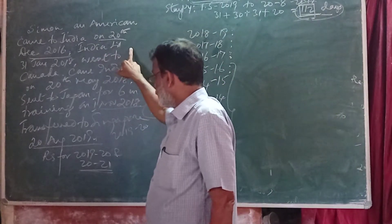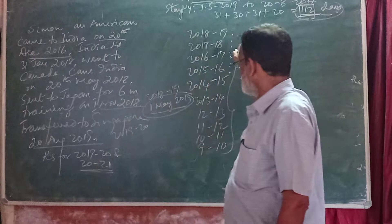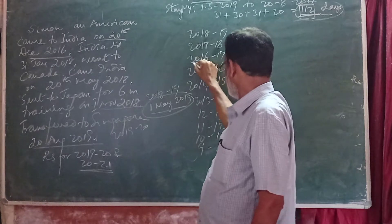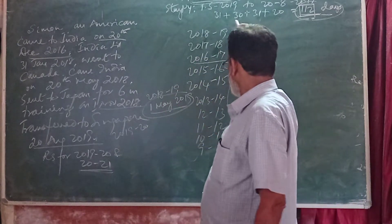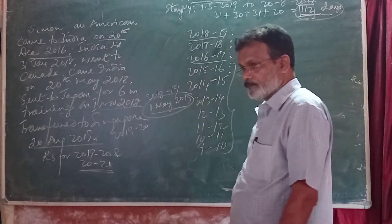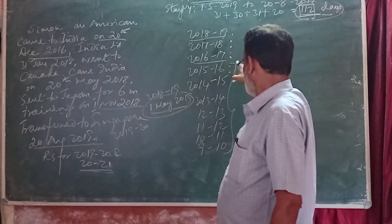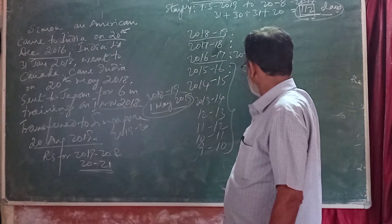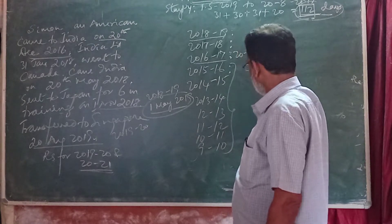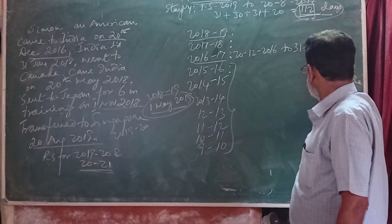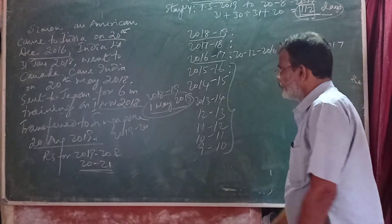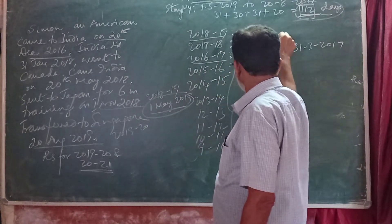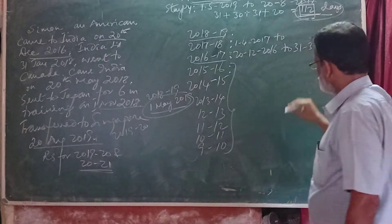He was in India till 31st January 2018, which falls in the previous year 2017-18. So he came to India during previous year 2016-17 and continued till 2017-18. During 2016-17, he came to India on 20th December 2016 and stayed up to 31st March 2017. During previous year 2017-18, he stayed from 1st April 2017 to 31st January 2018.